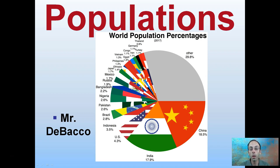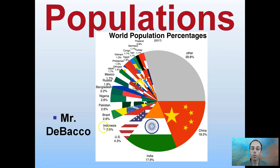Here we're going to look at populations in general, but on the title slide we have the world population percentages. China has the largest percentage based on 2017 statistics at 18.5% of the world's population. India is not far behind at 17.9%, the United States at 4.3%, Indonesia 3.5%. The others not listed are lumped into a category representing almost 30% of the world's population.